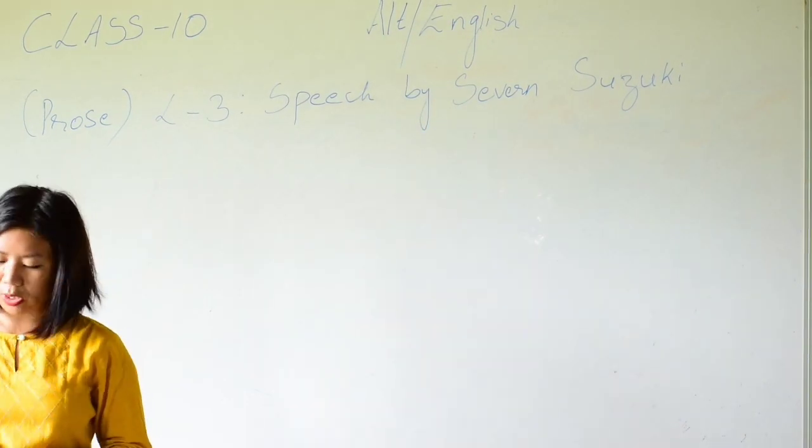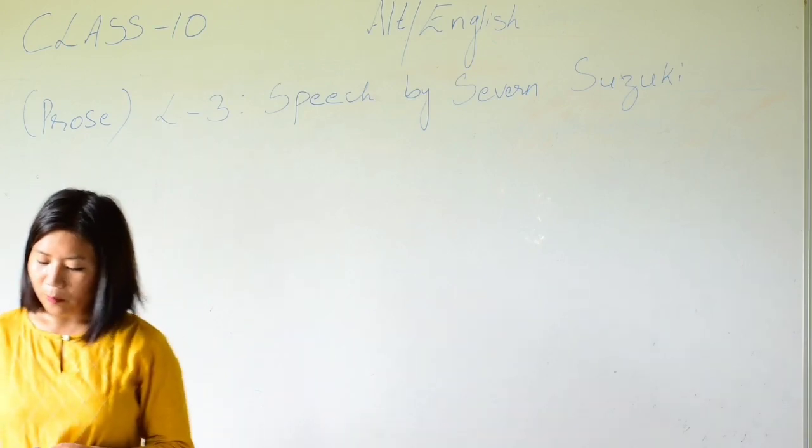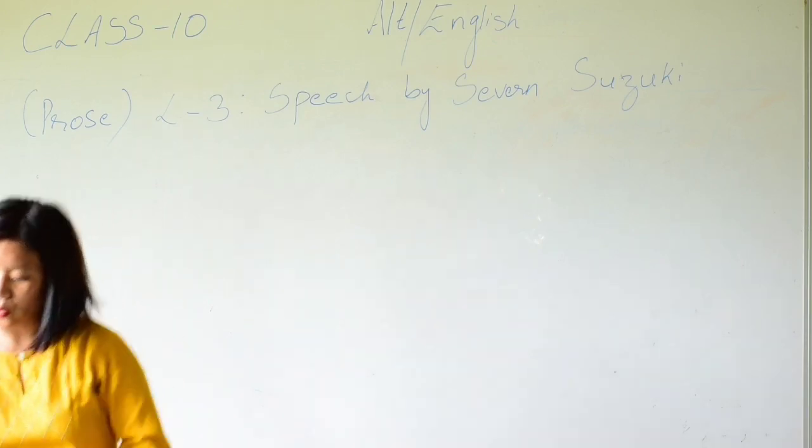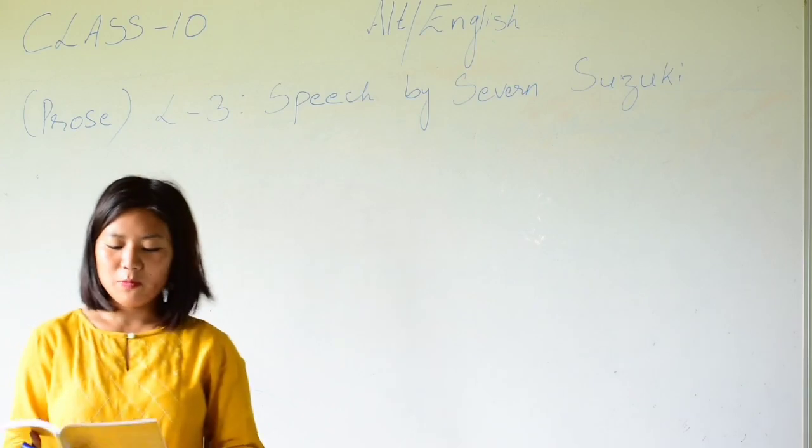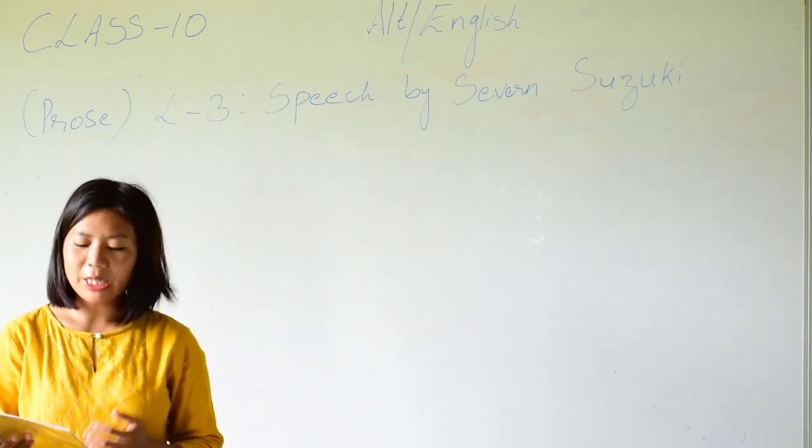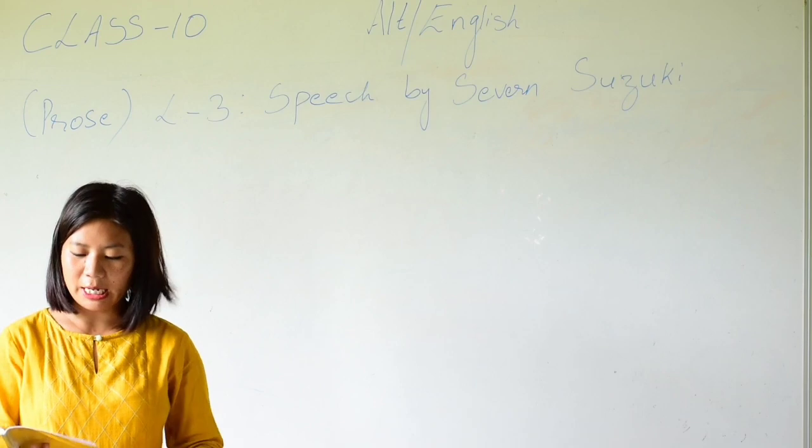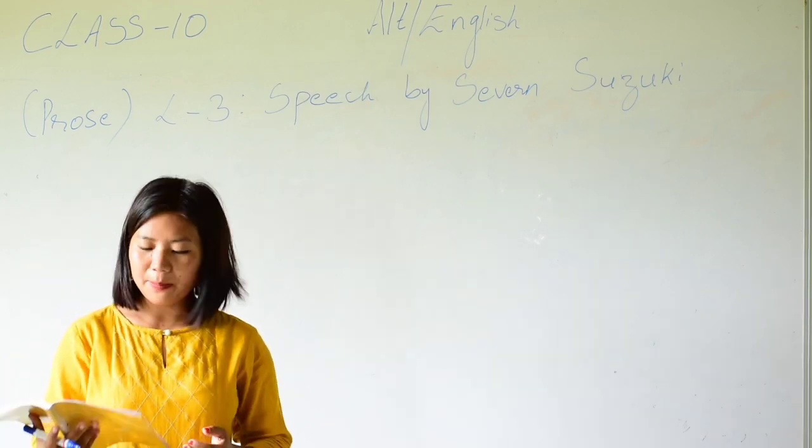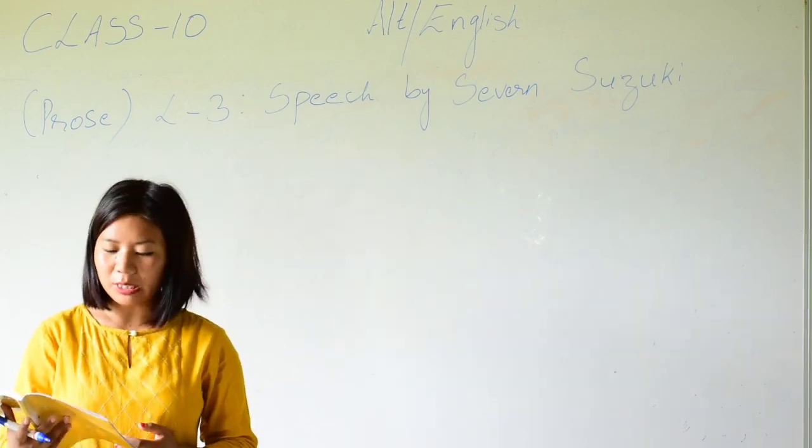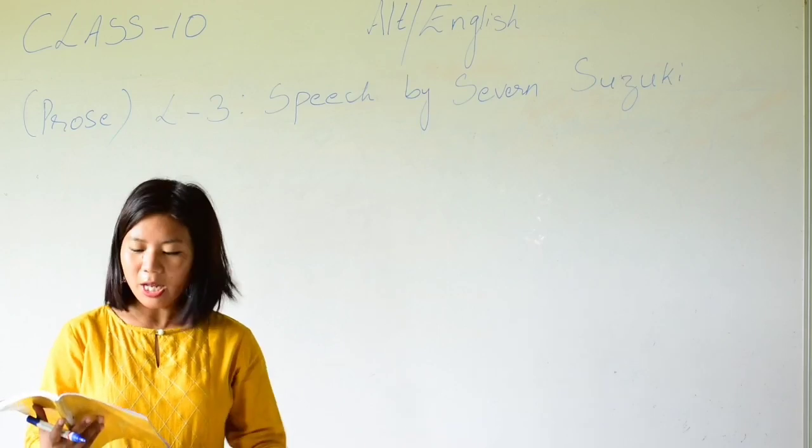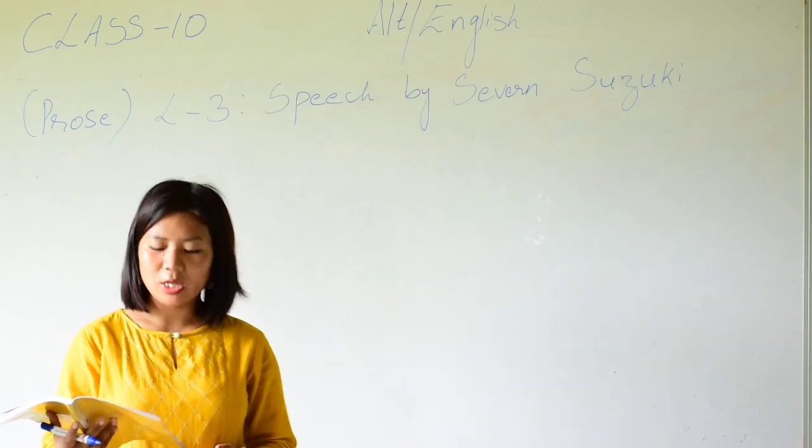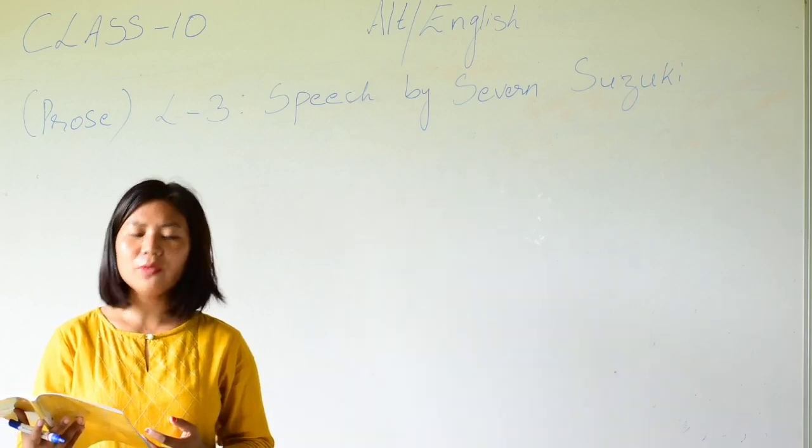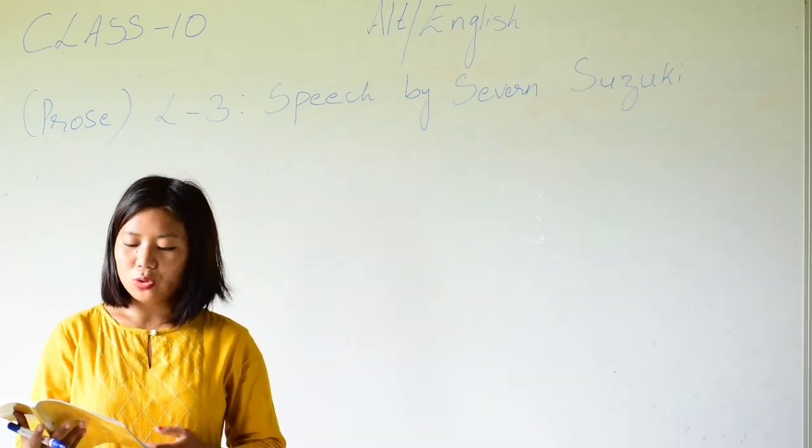Severn Suzuki was born on November 13th, 1979 in Vancouver, Canada. Her mother's name is Tara Elizabeth Kulis, who is a writer, and her father, David Suzuki, is a geneticist and an environmental activist.